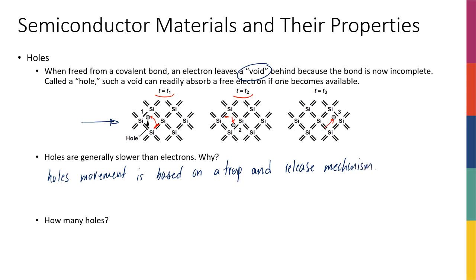You can think about it this way: holes are those electrons that get trapped and released, trapped again and released again. Then we have a different category of electrons that just keep moving. They don't get trapped, so they move freely, much faster than those electrons that get trapped and released. That's why holes are slower in general than electrons.